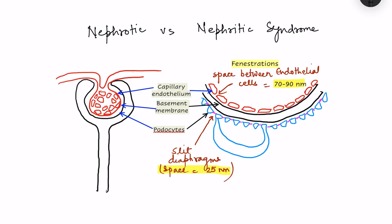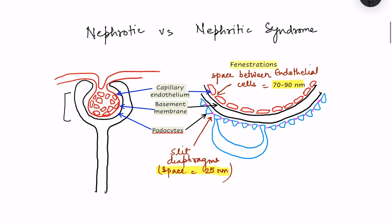Damage to the glomerulus causes either nephrotic syndrome or nephritic syndrome. The glomerulus forms the filtering apparatus in the nephron, and the filtration barrier through which substances enter the nephron consists of three main layers.